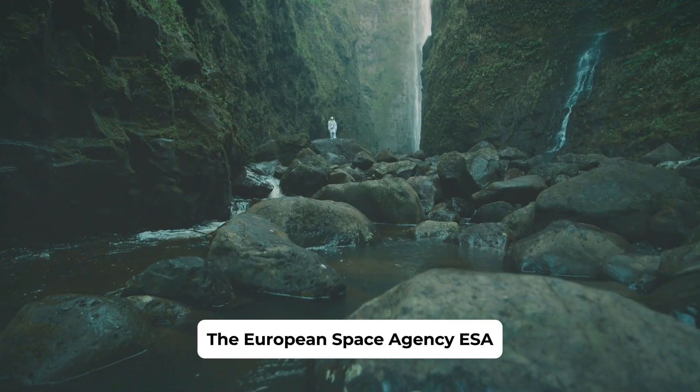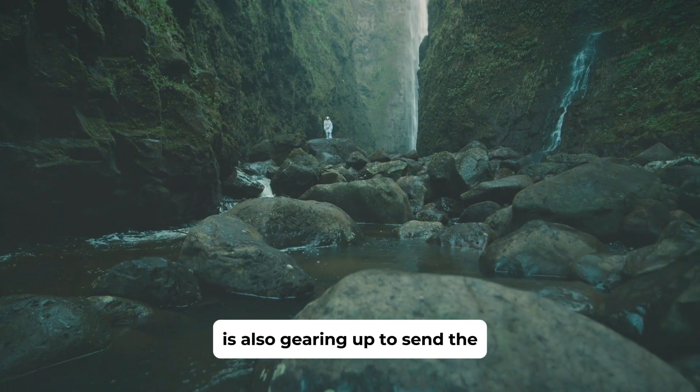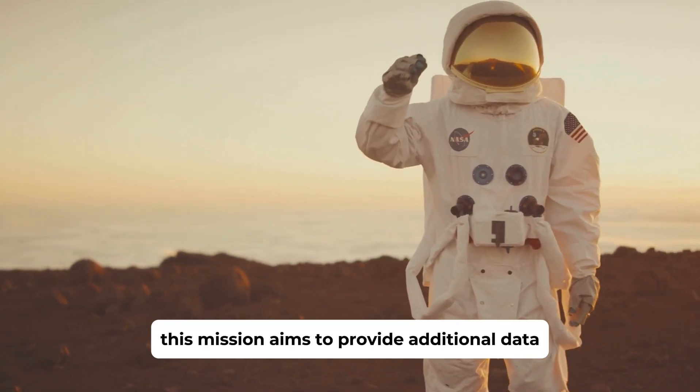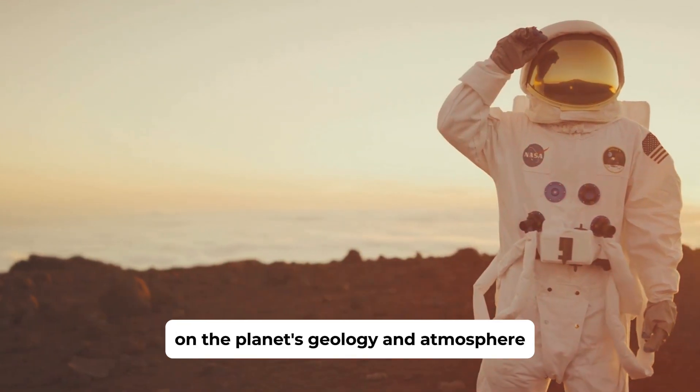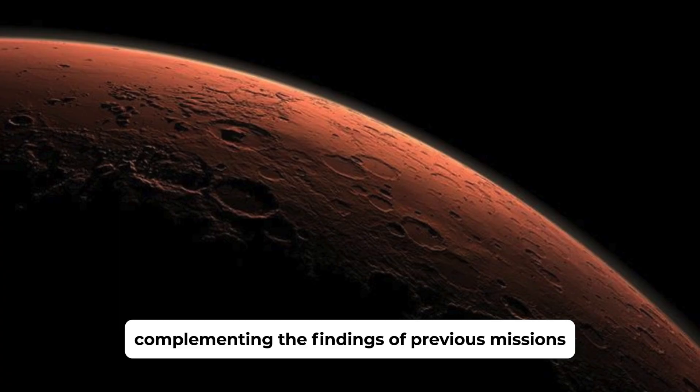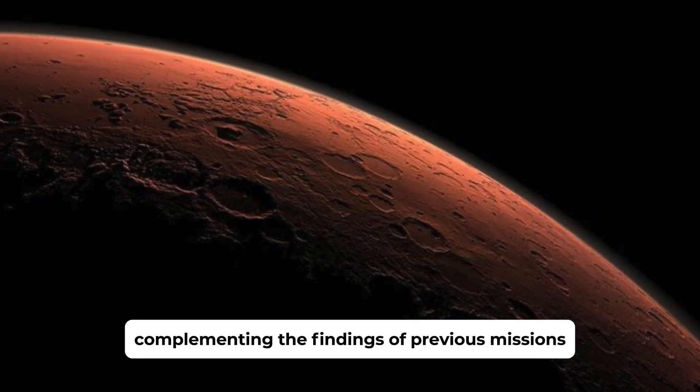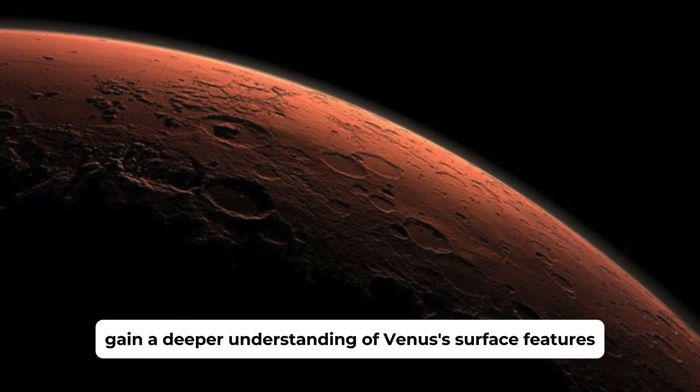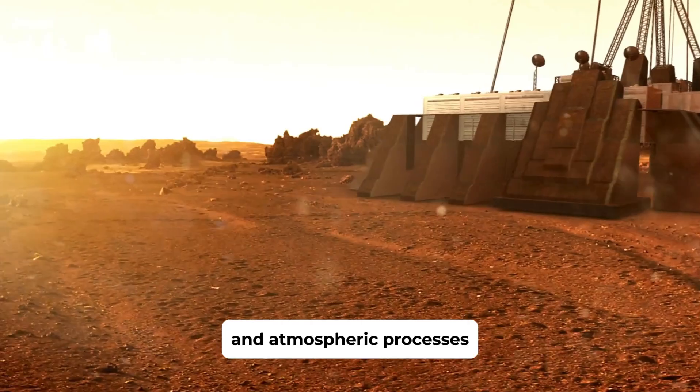The European Space Agency, ESA, is also gearing up to send the Envision Orbiter to Venus. This mission aims to provide additional data on the planet's geology and atmosphere, complementing the findings of previous missions. The Envision Orbiter will help scientists gain a deeper understanding of Venus's surface features and atmospheric processes.